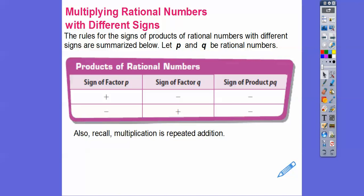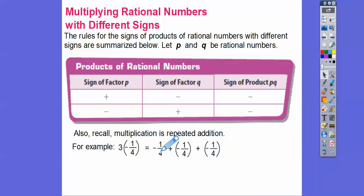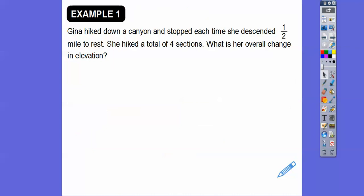Remember, multiplication is just repeated addition. For example, 3 times negative 1/4 is the same as negative 1/4 added together 3 times. So negative 1/4 plus negative 1/4 plus negative 1/4 gives us negative 2/4 and then negative 3/4. So multiplication is just a form of addition.